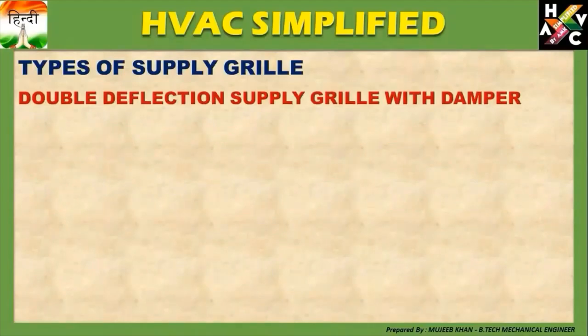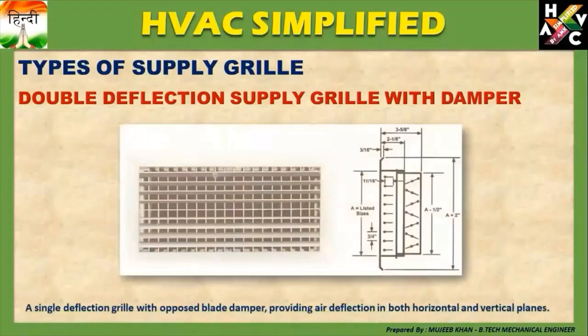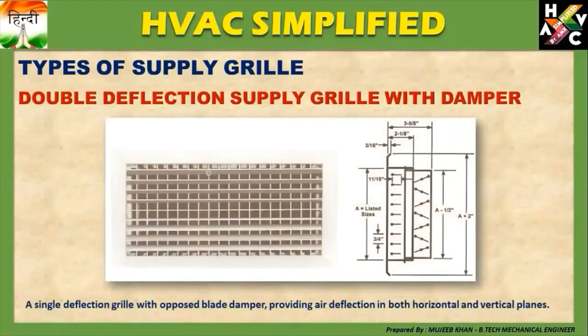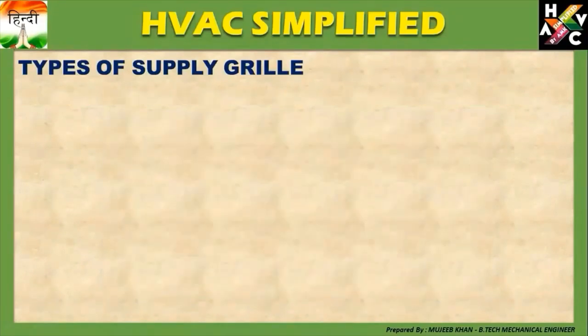Next हमारा होता है Double Deflection Supply Grill with Damper। यहां उसी Double Deflection Supply Grill को एक Opposed Blade Damper add करते हैं।